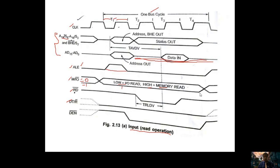Before T2, M/IO̅ is in the tri-state inactive state — no need to select memory or I/O during T1. Only after T1 do we set M/IO̅: zero for selecting I/O, one for selecting memory. The RD̅ signal must be high up to T1, then low from T2 to T4. Low on RD̅ indicates the processor is performing a read operation. If M/IO̅ is low it is an I/O read; if M/IO̅ is high it is a memory read.